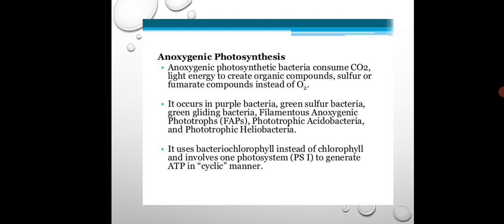In oxygenic photosynthesis, there were two photosystems — Photosystem I and Photosystem II — and the function of Photosystem I was to generate ATP. In anoxygenic photosynthesis, there is involvement of just one photosystem, that is Photosystem I, to generate ATP in a cyclic manner. So anoxygenic photosynthesis is a cyclic process involving only Photosystem I.